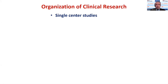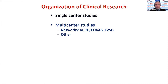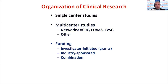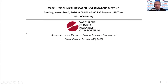Some research is done at one center — at the University of Pennsylvania we conduct a number of different vasculitis research studies. If we develop new ideas we bring them to other centers. There are multi-center networks such as the Vasculitis Clinical Research Consortium, the European Vasculitis Society, and the French Vasculitis Study Group. Funding makes a big difference — whether investigator-initiated NIH grants, industry-sponsored, or a combination where we get drug and some money but run the studies ourselves.